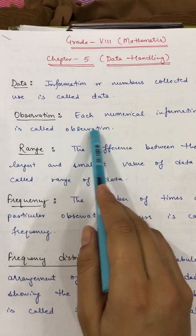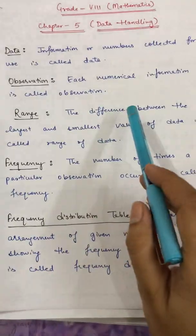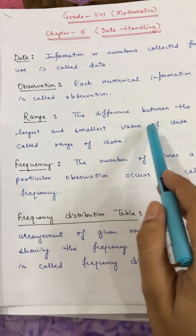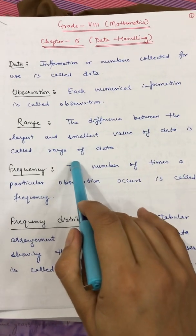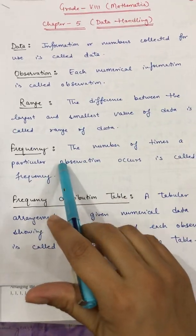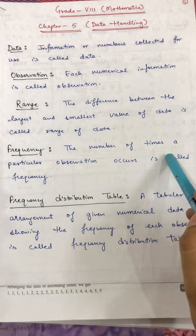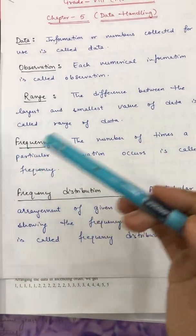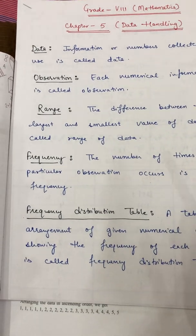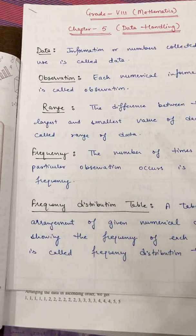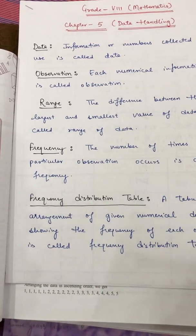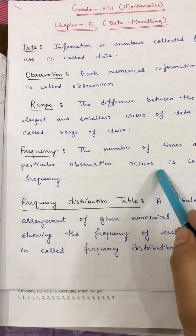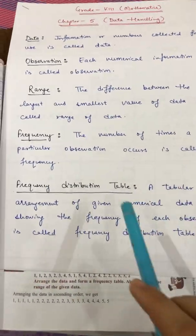Range: the difference between the largest and the smallest value of data is called the range. Frequency: the number of times a particular observation occurs. Suppose in the data, the number 2 is occurring three times, so your frequency of 2 will be 3.